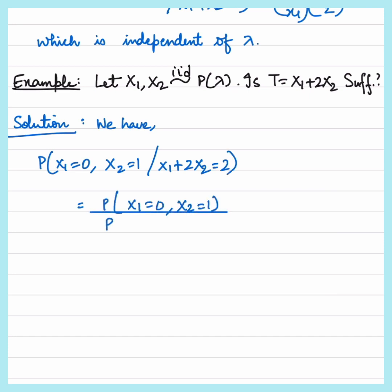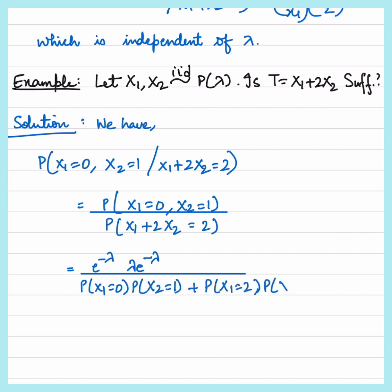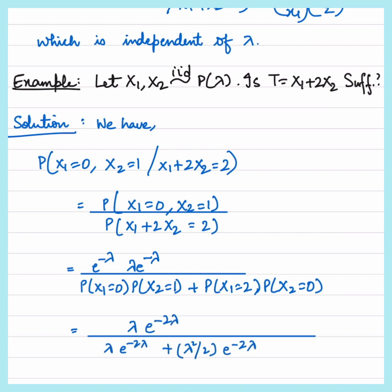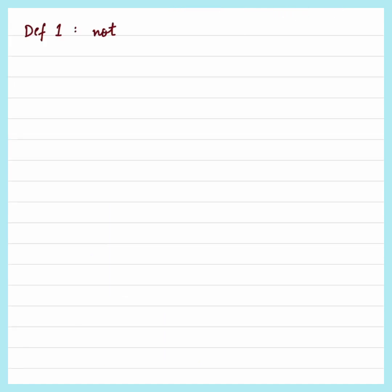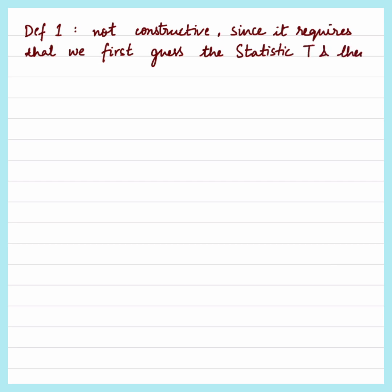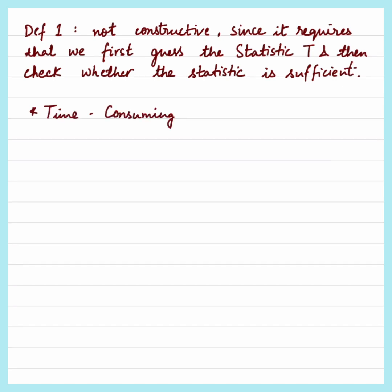Taking another example where x1 and x2 follow Poisson(lambda), we check if x1 + 2*x2 is sufficient for lambda or not. Solving it, we can see that it does not come out to be independent of lambda. Hence we can say that not every statistic is sufficient. The problem with this definition is it's not constructive — we need to first guess an estimator and then check whether it is sufficient, which is quite time consuming.